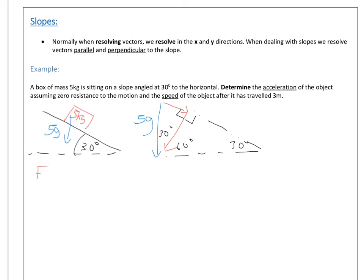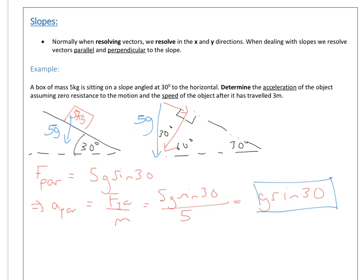Okay, so the force parallel to the slope is going to be 5g sine 30. Why sine 30? Because it's the side opposite the 30 degree angle, so you're using your sine function, which means the acceleration parallel is going to be the force parallel divided by the mass, 5g sine 30, obviously divided by 5, so it's just going to be g sine 30. And this happens typically with any slope question—you end up getting an expression for the acceleration.